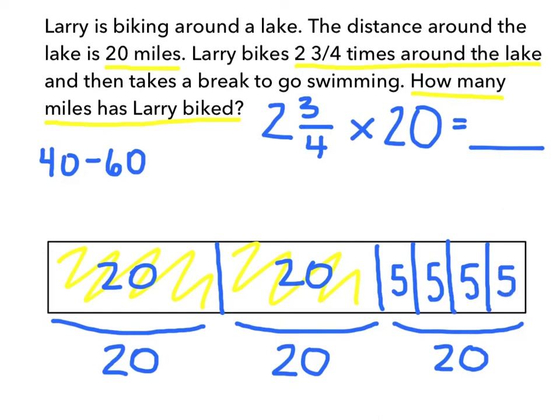Now Larry only biked 3 of those fourths. So he biked this one, he biked this one, and he biked this one. But he did not bike the last fourth. So we need to figure out what the totals are here.